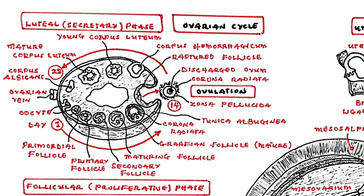A corona radiata of cells and the zona pellucida-lined ovum burst from the follicle into the waiting fimbria of the uterine tube. Once the oocyte has been discharged, the ruptured follicle involutes — the membranes close up, some bleeding and clotting occurs, forming a corpus hemorrhagicum. The follicle cells then transition into a corpus luteum, characterized by accumulation of large amounts of lipid necessary for subsequent secretion of steroid hormones. The corpus luteum secretes estrogen and progesterone during the luteal phase of the ovarian cycle.